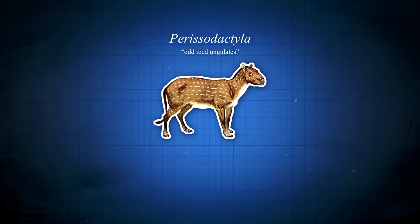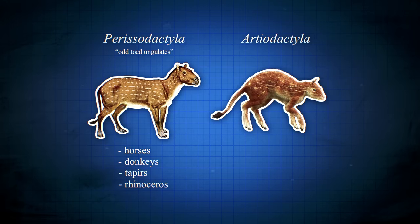Included in this development was Perissodactyla, or odd-toed ungulates like horses, donkeys, tapirs, and rhinoceros. Artiodactyla, or the even-toed ungulates, which holy crap includes even more popular animals like all camelids, pigs, ruminants like giraffes, deer, antelopes, cattle, sheep, goats, etc.